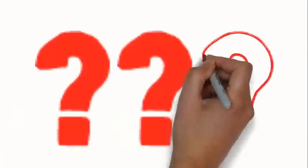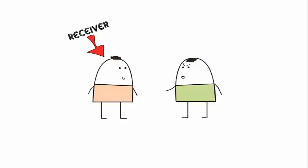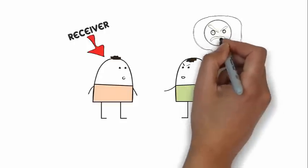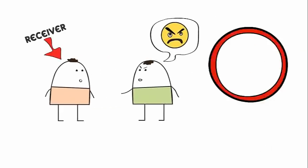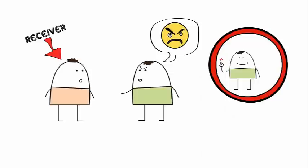So what is an inoculation conversation? It's telling your receiver they are about to receive bad or difficult news before you actually tell them the bad or difficult news. So inoculate first. This prepares the other person for what you have to say.